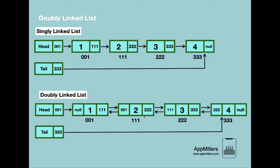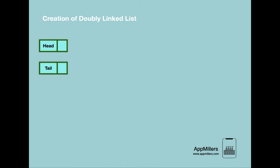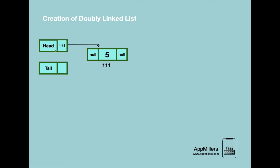Now let's see how we can create a double linked list. The first thing we are going to do is create head and tail references, and then we will create a blank node. After creating a blank node in memory, we assign a value to it — let's say the value is 5. Since it's the only node in the list, the previous and next references will be null. Then we need to connect head and tail to this node. We know the physical address of this node in memory is triple 1, so we set head reference to triple 1, creating a link between head and this node. Then we update tail reference with the physical location triple 1, creating a connection between tail and this node.